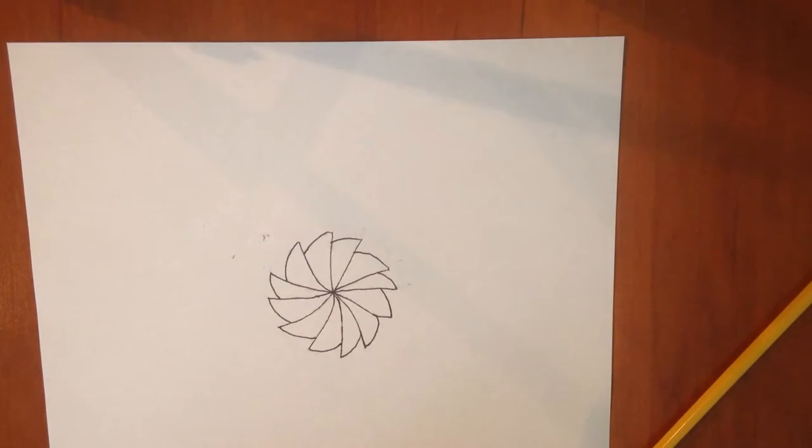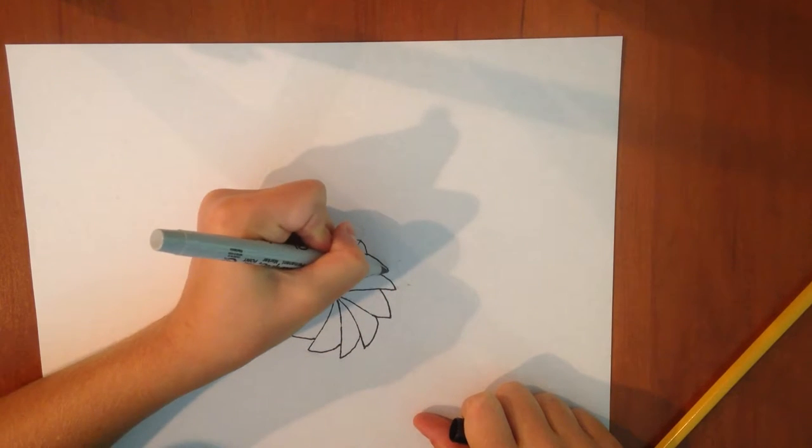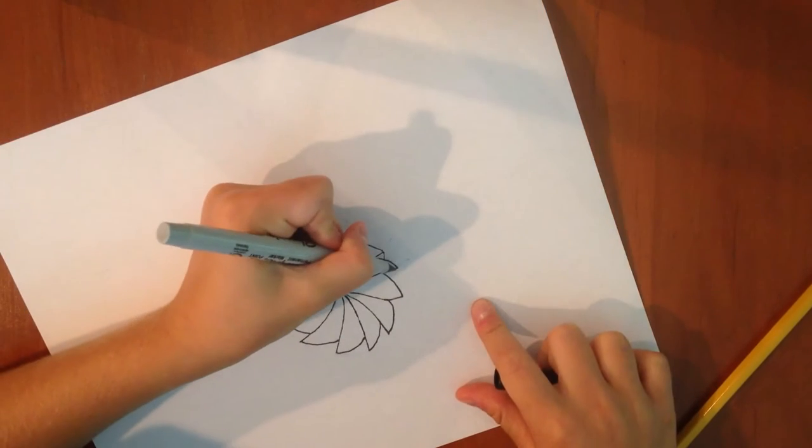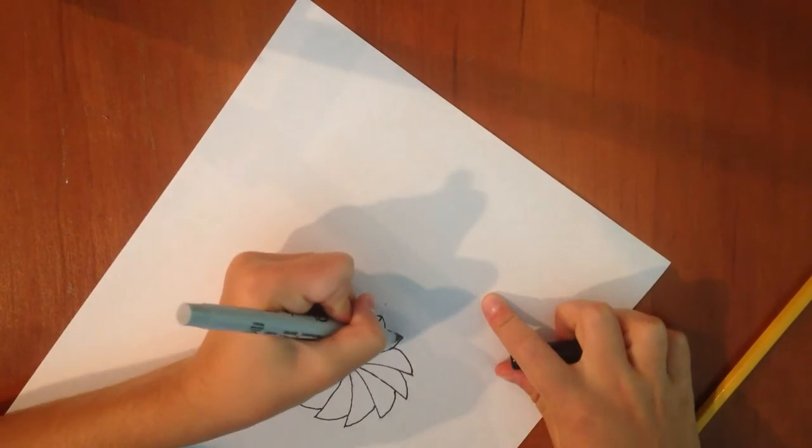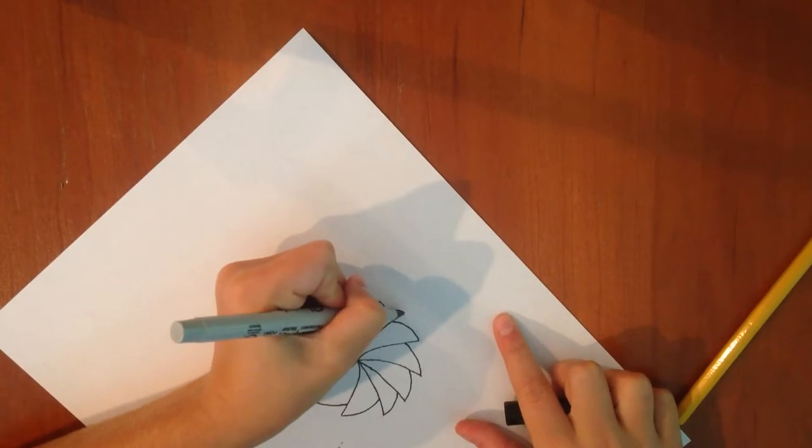Alright, now you're going to draw a line from the point right here, down here, and do that to every little segment. This is going to be your shading.